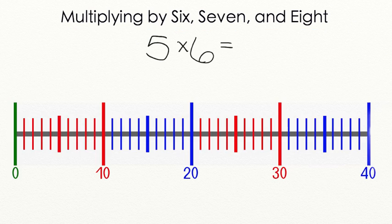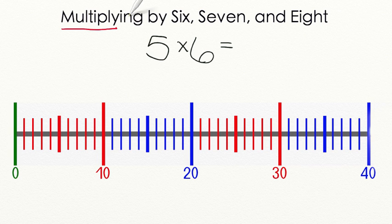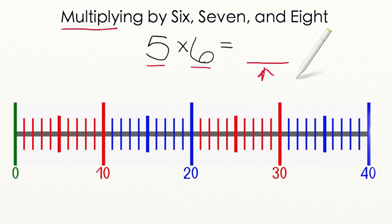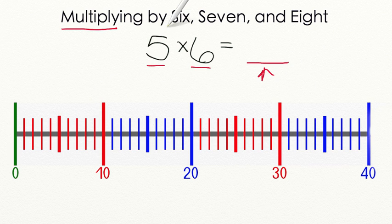We are going to begin today by multiplying 5 times 6. Now remember, multiplying means repeated addition, so we are going to repeatedly add 5 groups of 6. Our first step is to find the product, or the answer to this multiplication problem. We are going to use this number line to create 5 groups of 6.